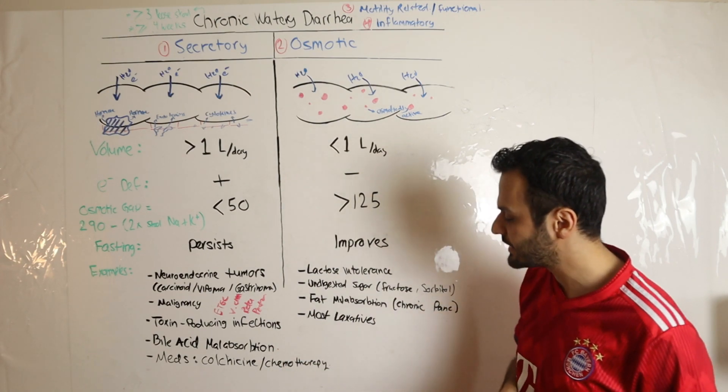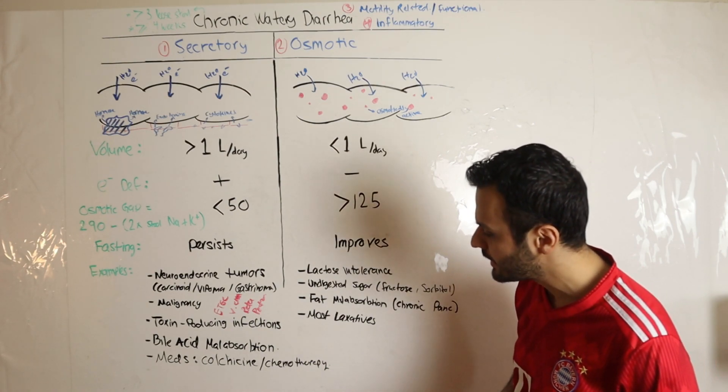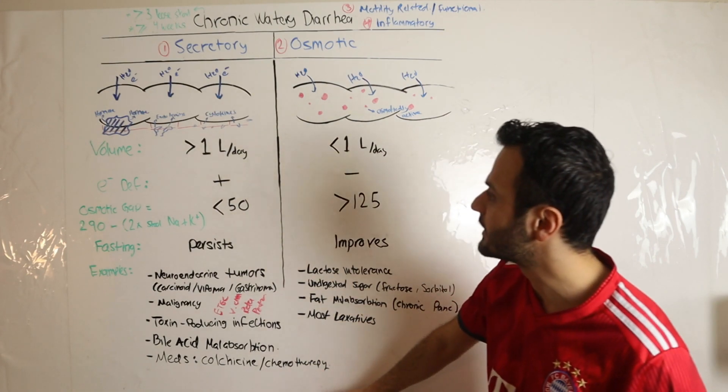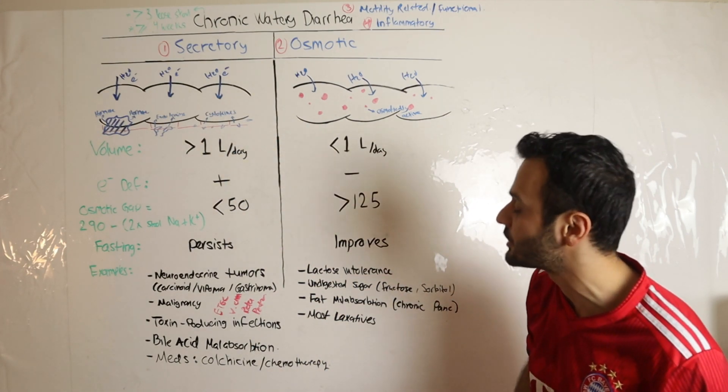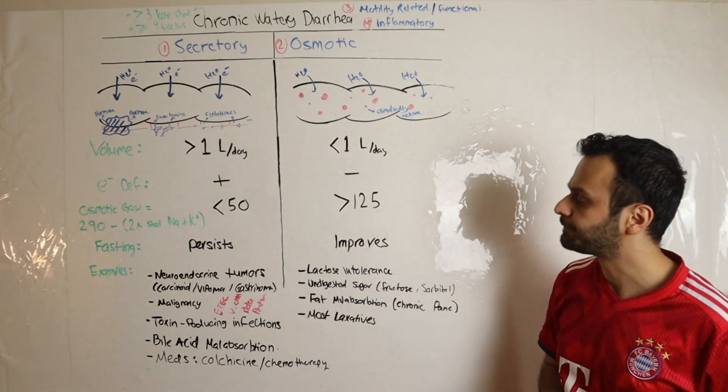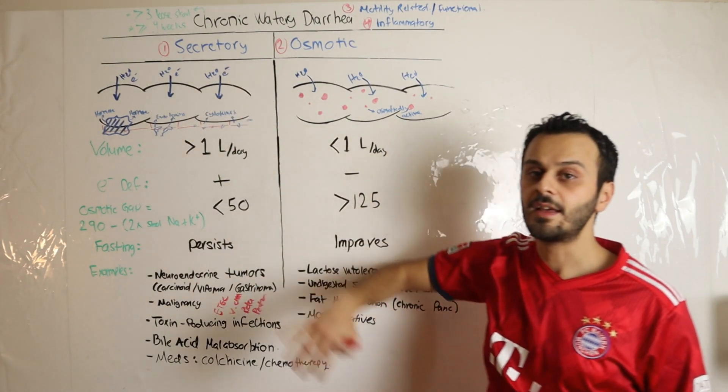Last but not least, medications – as I mentioned, some medications are notorious for causing heavy inflammation in the GI tract, such as colchicine or chemotherapy.